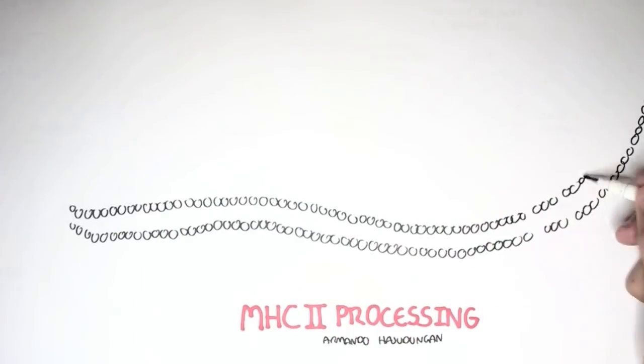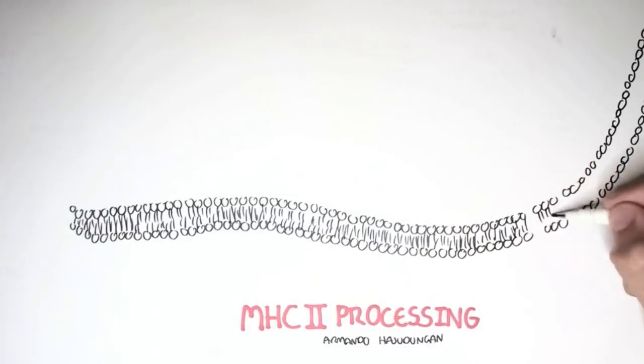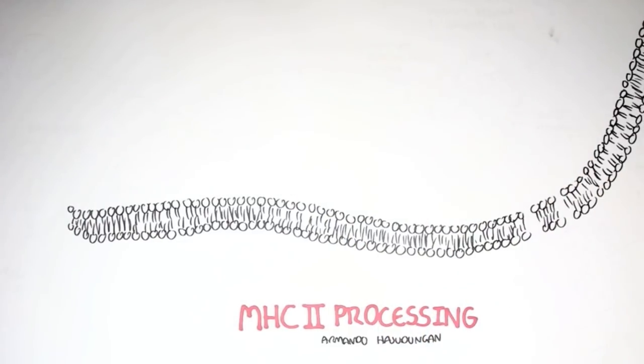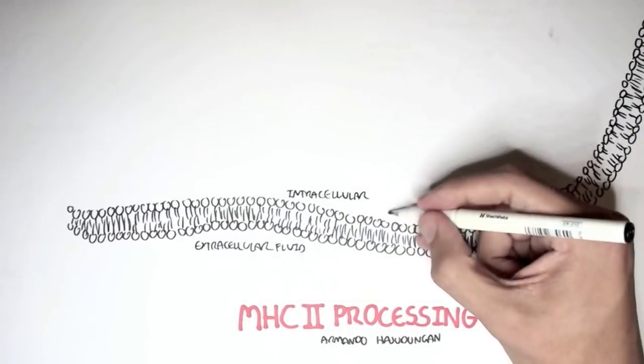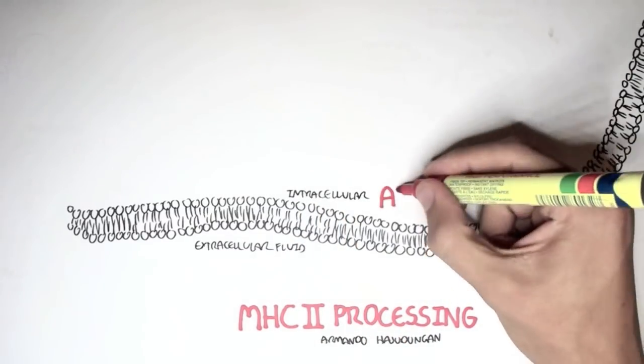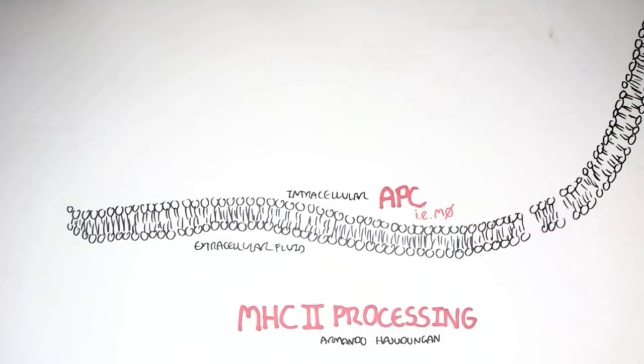Let's look at the process in an overview. So this here is a cell. Here is the extracellular fluid and here is the intracellular fluid of the cell. This cell can only be an antigen-presenting cell. So let's just say it's a macrophage.